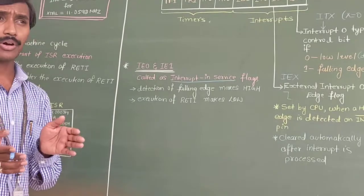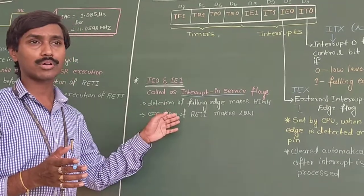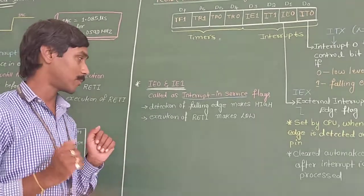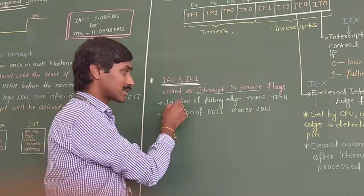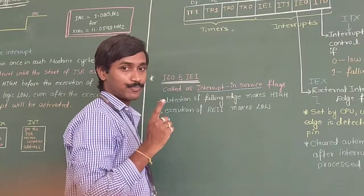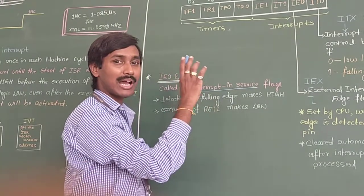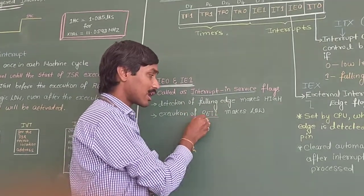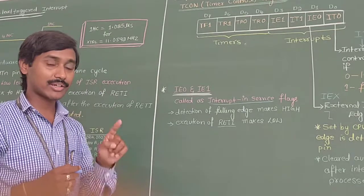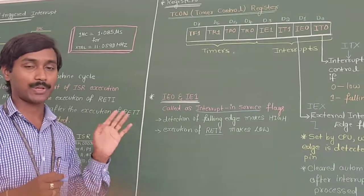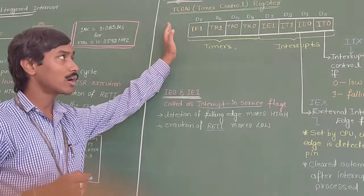The IE0 and IE1 flag bits indicate whether an external hardware interrupt signal has activated and the ISR is in execution. Detection of a falling edge makes IE0 and IE1 high, and execution of the RETI instruction makes them 0. The RETI instruction is the last instruction of every interrupt service routine, so once RETI executes it indicates that ISR execution is finished. IE0 and IE1 become 1 when a falling edge is detected on the INT0 or INT1 pin, and become 0 once the RETI instruction is executed.